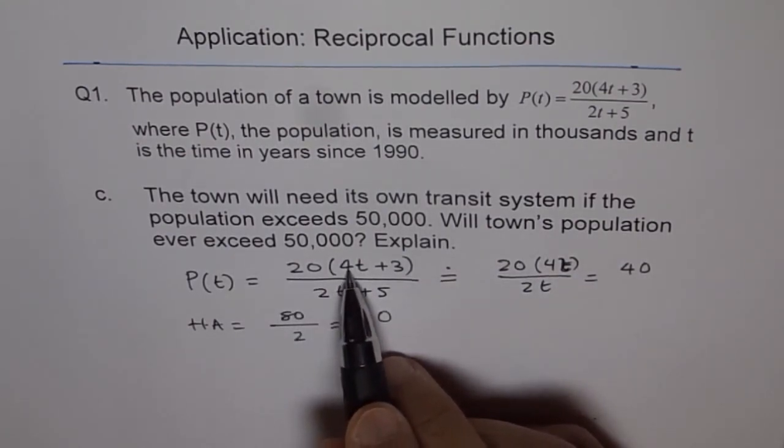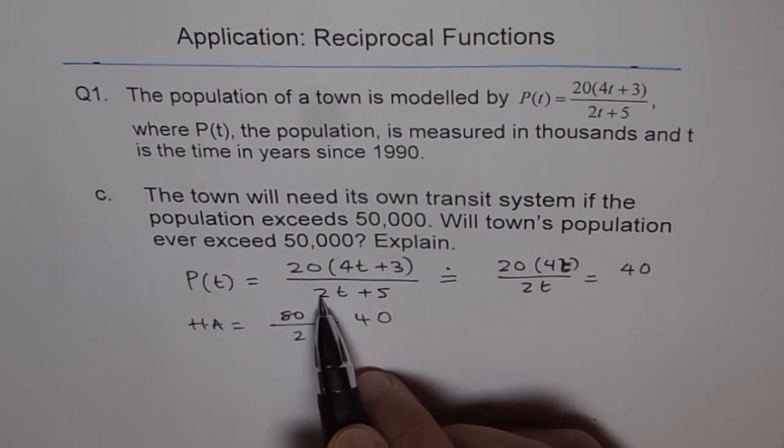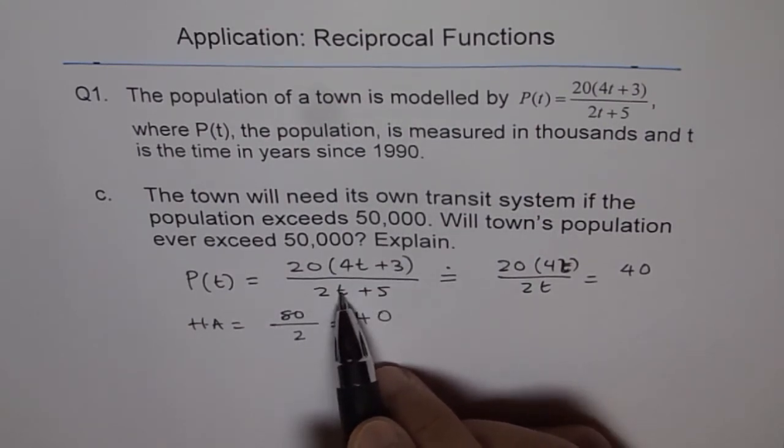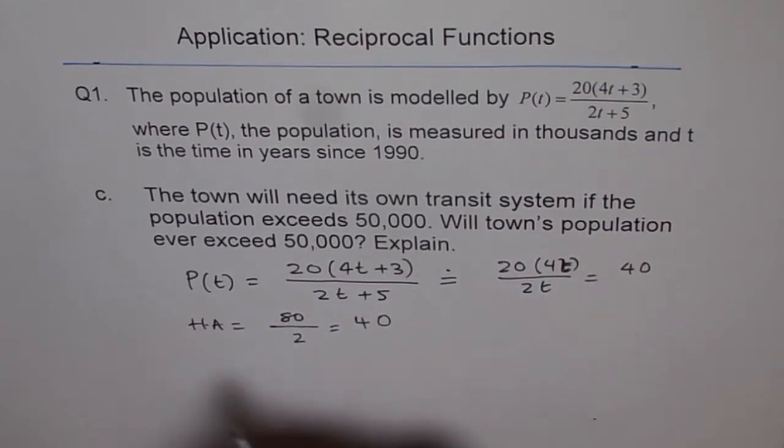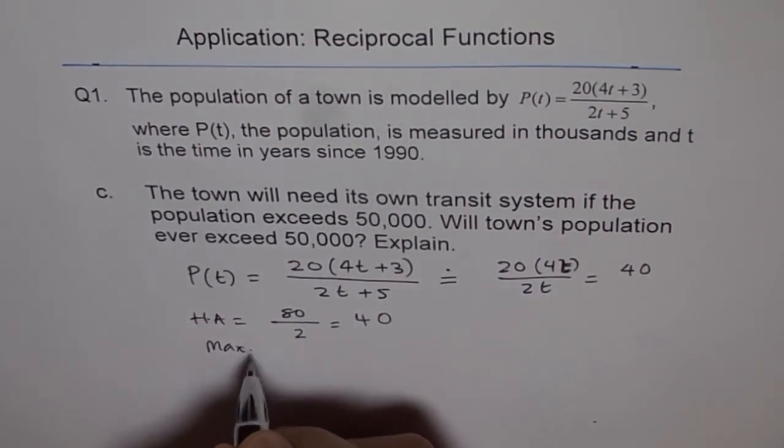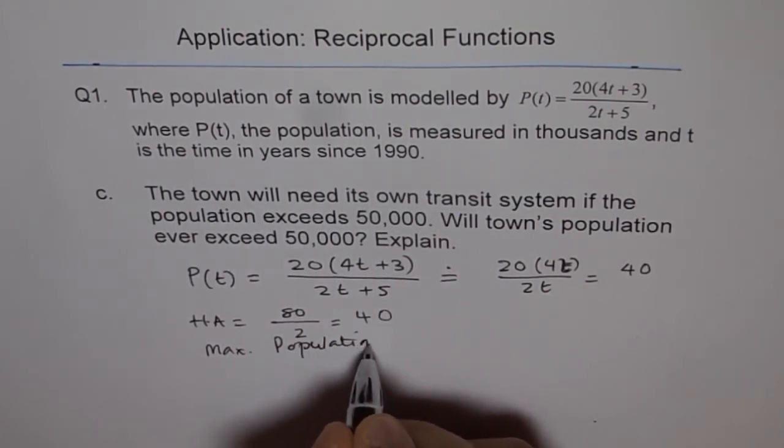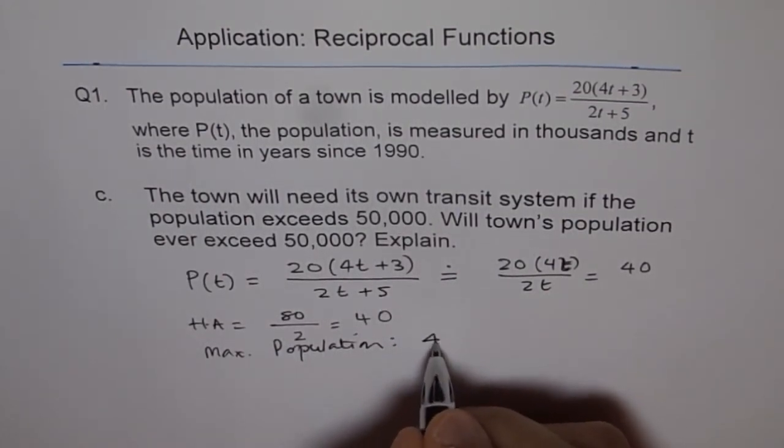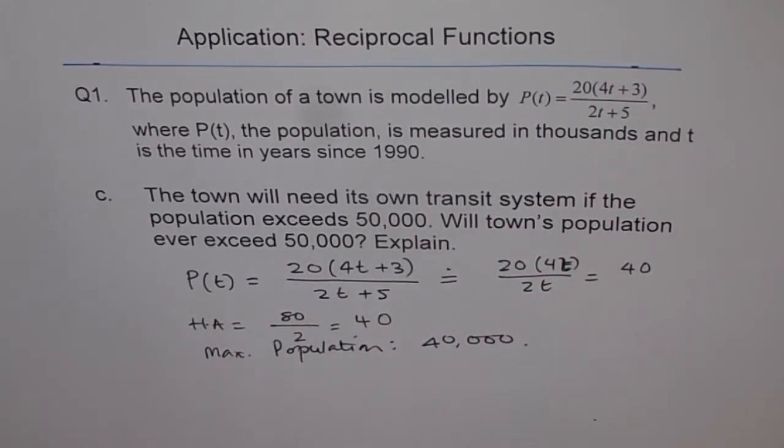20 times 4 is 80, right? We are neglecting 3. And in the denominator, we just have 2t. t and t will cancel out, and you get 80 divided by 2 as 40. So the maximum population which we expect of this town is 40,000. So the transit system will not be required for this particular town.